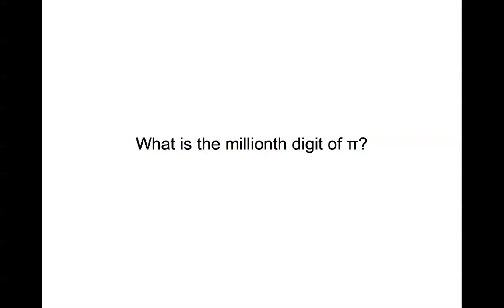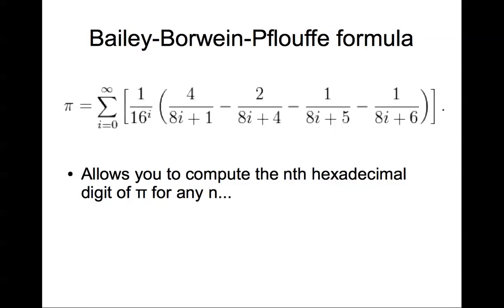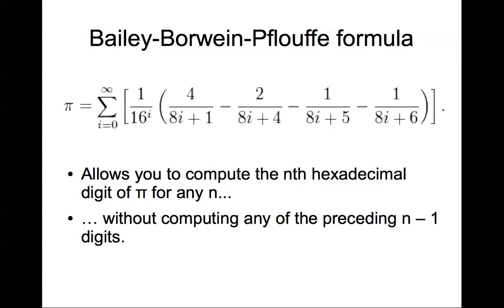What is the millionth digit of pi? Well, three guys - Bailey, Borwein, and Plouffe - came up with an interesting formula for it. It allows you to compute the nth hexadecimal digit of pi for any n. And the really amazing thing about it is that it does this without computing any of the preceding digits. You just go out there and snatch any digit you want without getting any of the digits before that.